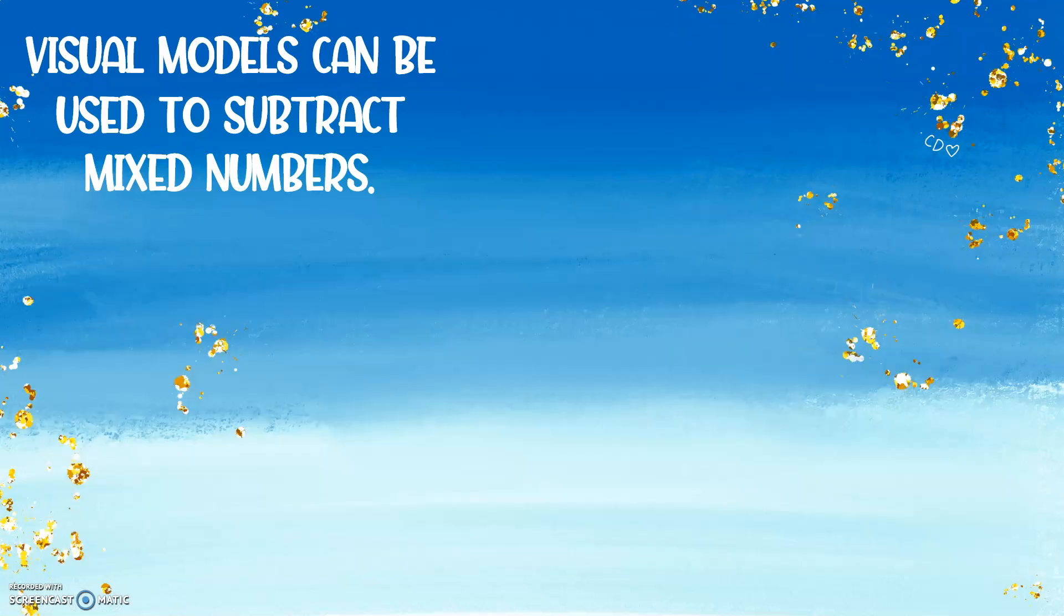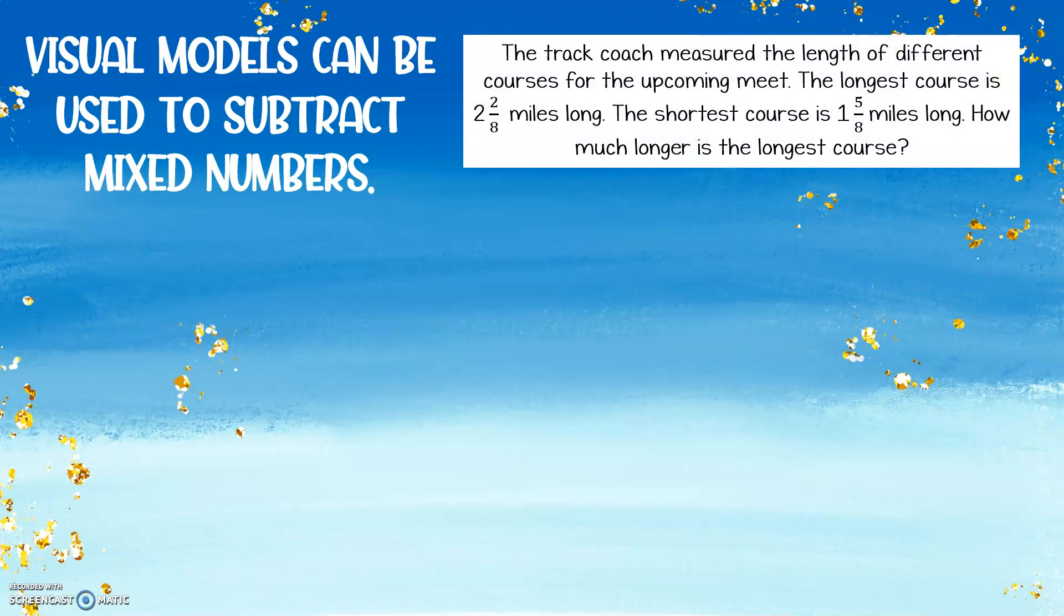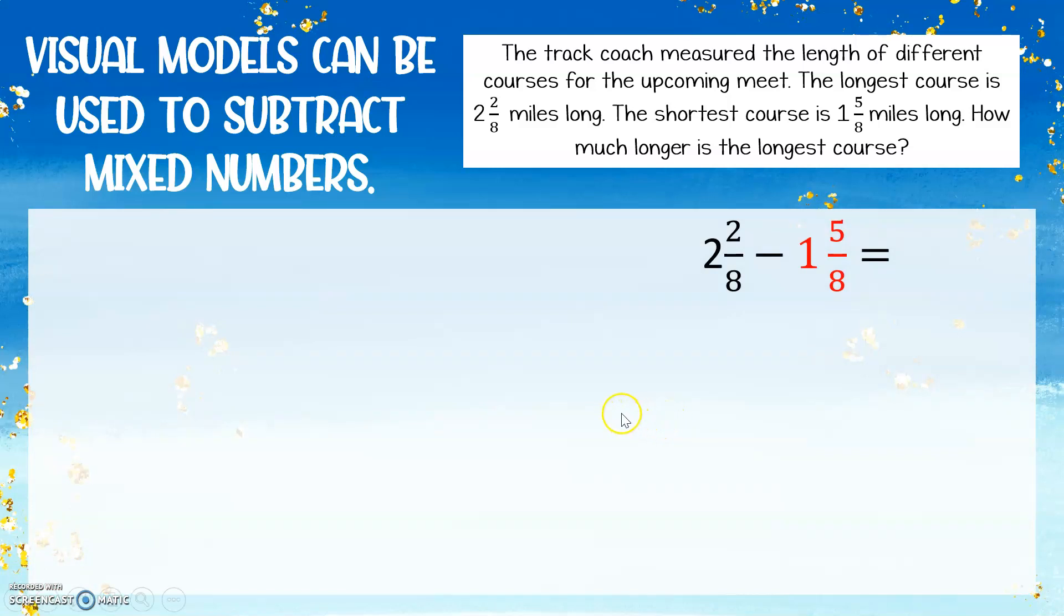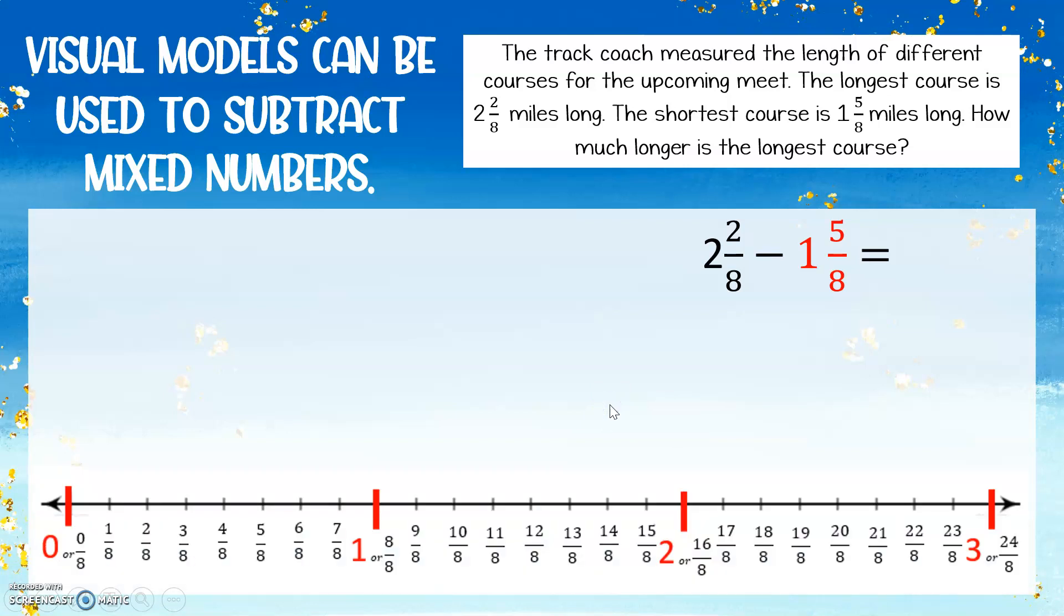I'm going to also show you how to solve this on the number line. I prefer to use the area models because they work better for me, but if you like number lines, go for it. So here I'm going to have my number line. We're going to have the same word problem and equation, so our answer should still be 5 eighths, but we're seeing another strategy. I'm going to set up my number line in eighths, and I know I have to mark up to 2 and 2 eighths, so I go all the way to 3.